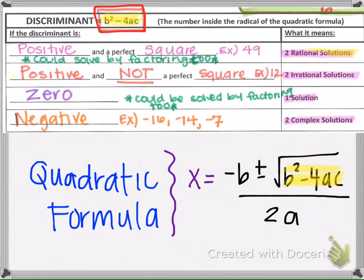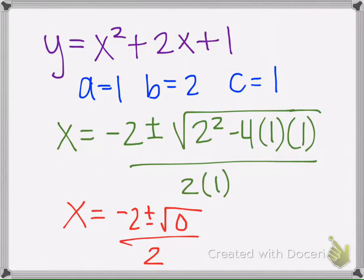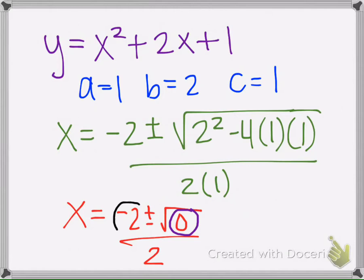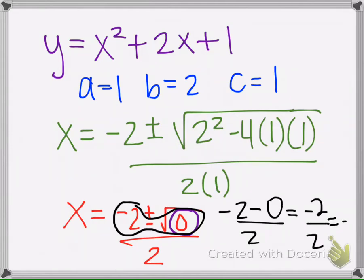We can also get a discriminant of 0. If the number in the radical is 0, it means the equation is going to have only one solution. For example, if you plug in A, B, and C into the quadratic formula and get 0 inside the radical, then negative 2 plus 0 divided by 2 gives negative 1, and negative 2 minus 0 gives the same thing — negative 1. So we only get one solution when the discriminant is 0.